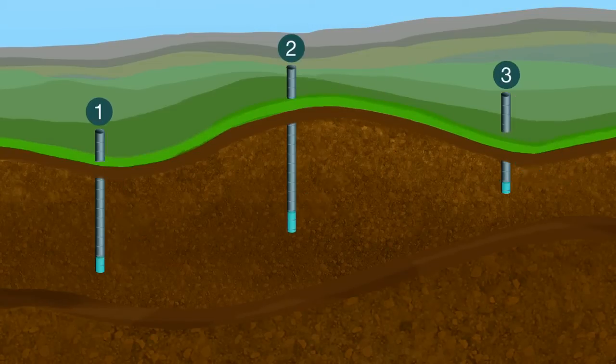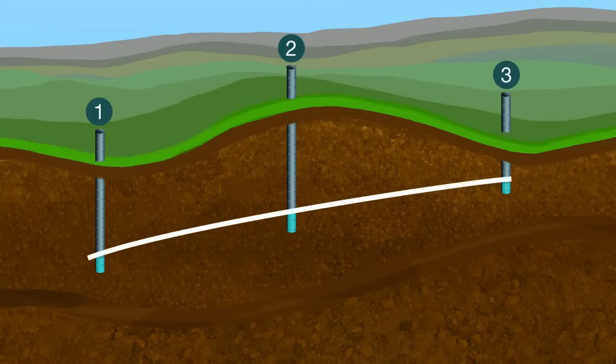By looking at all the levels of the water table, we can see that well three has the highest water table and well one has the lowest. Well two is in the middle.